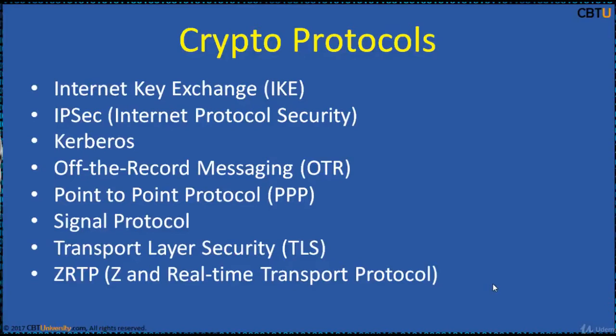Point-to-Point Protocol – PPP: This is a data link layer communication protocol used to establish a direct connection between two nodes. It connects two routers directly without any host or networking device in between. It can provide connection, authentication, transmission, encryption, and compression as well.